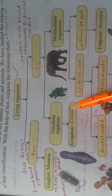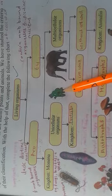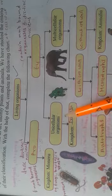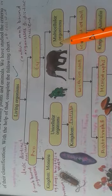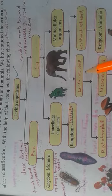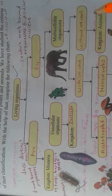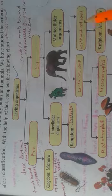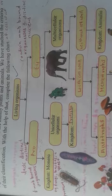In case of eukaryotes, both unicellular and multicellular organisms are present. Unicellular organisms have a body made of a single cell — Kingdom Protista contains unicellular organisms. Multicellular organisms are then classified into those with cell wall and those without cell wall. Kingdom Animalia contains organisms whose cells are without a cell wall.